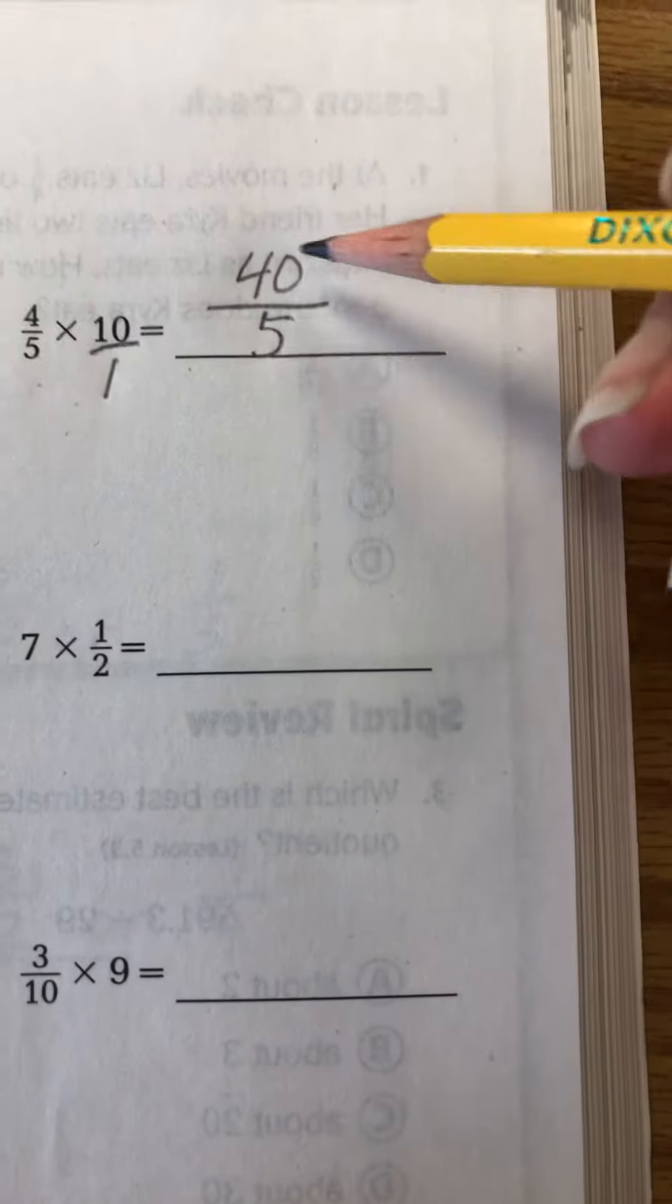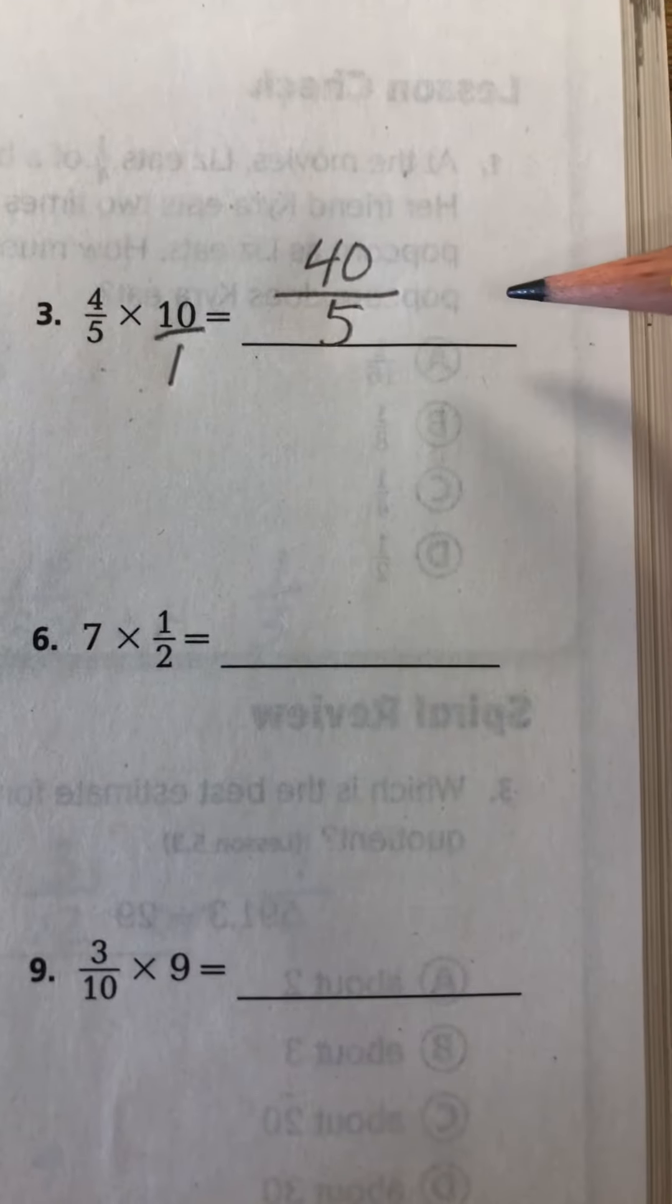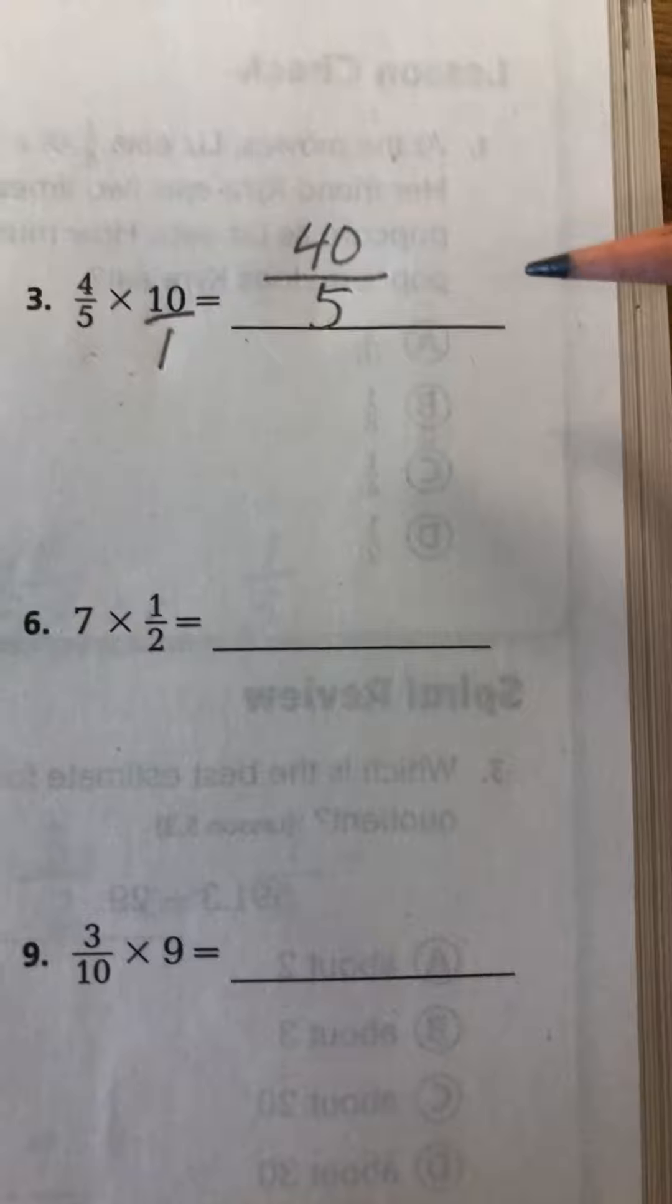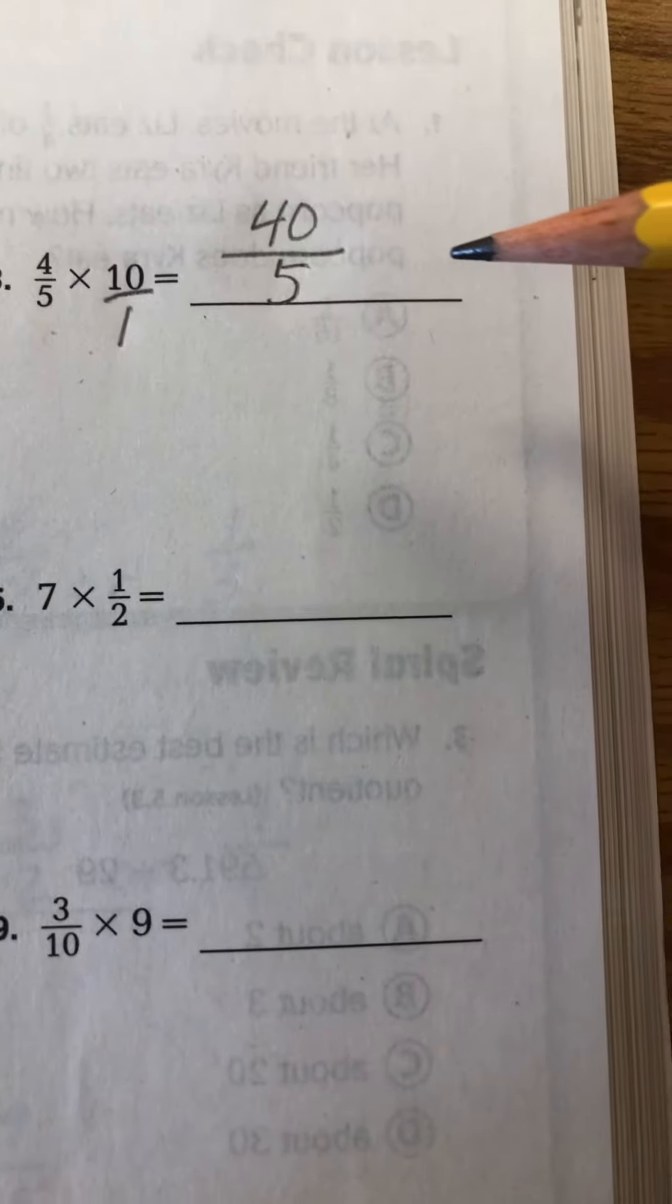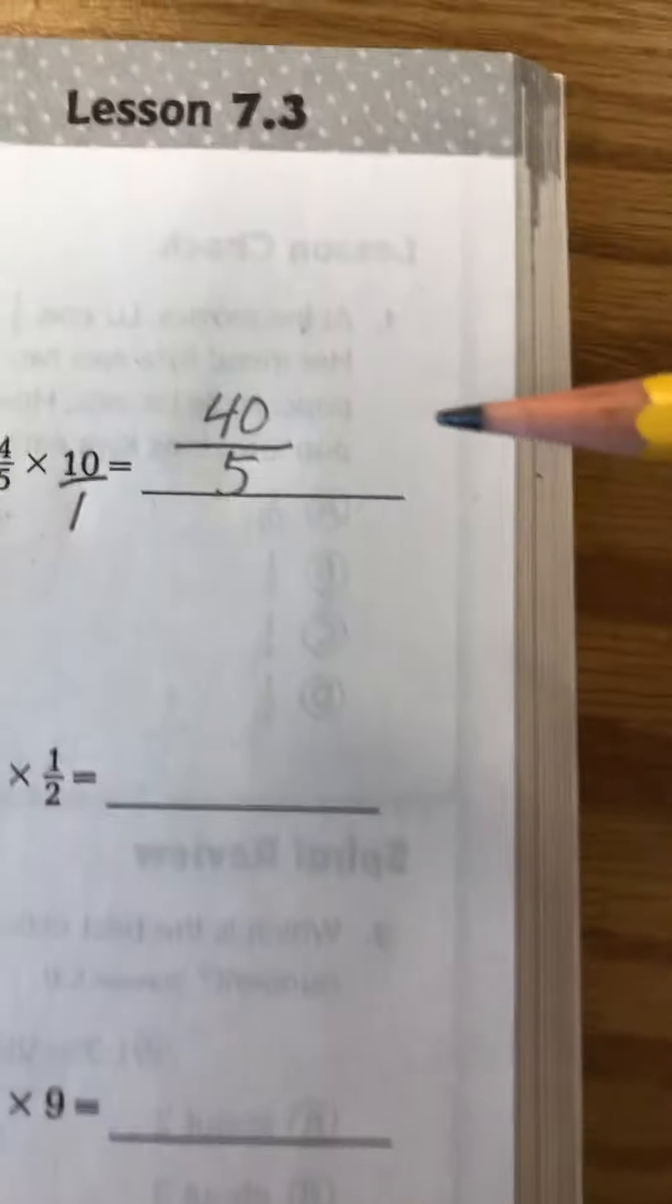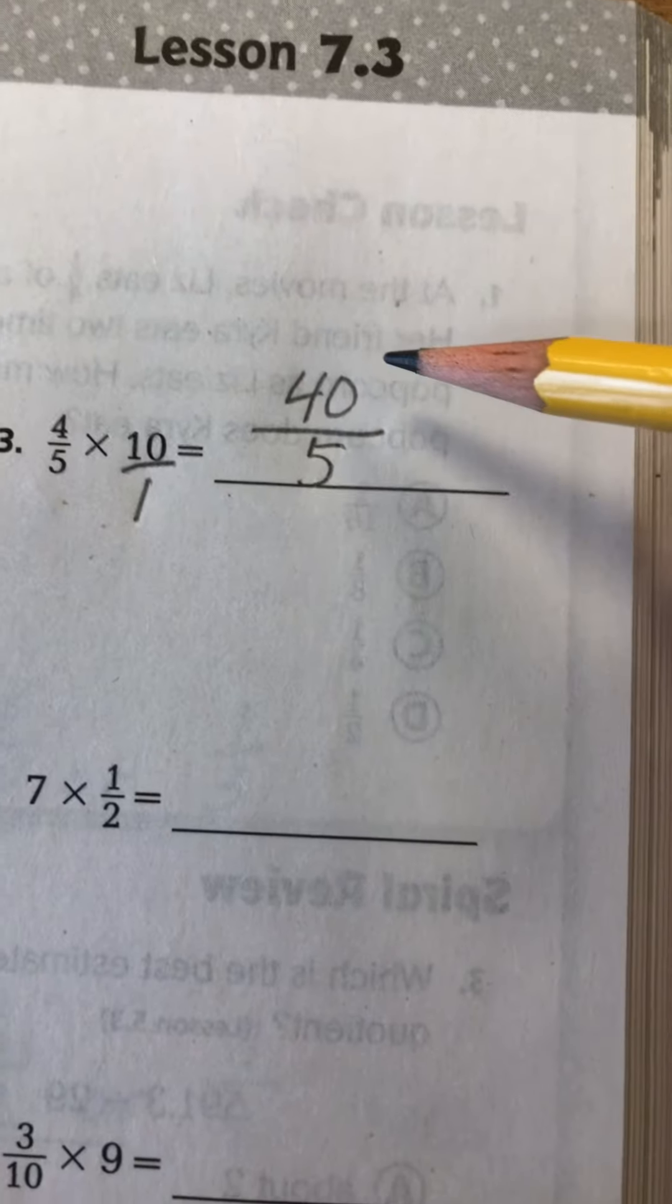So we've got 40 over 5 now as our answer, and that, as you know, is an improper fraction. You can't leave it as an improper fraction. That we can't do. So we need to simplify this.